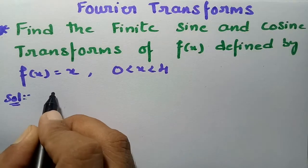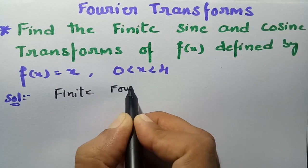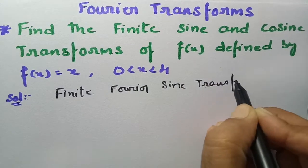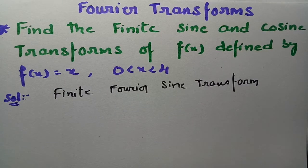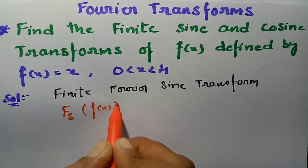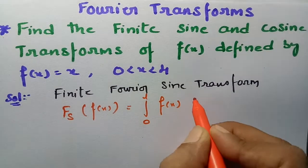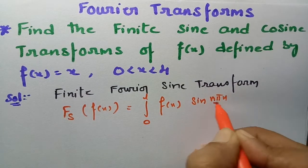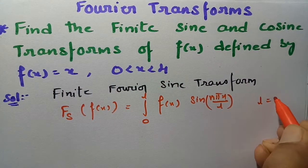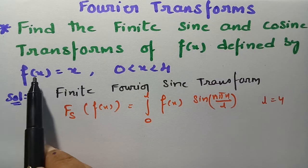First of all I am going to calculate the finite Fourier sine transform. The formula is: the finite sine transform of f(x) is equal to the integral from 0 to l of f(x) times sin(nπx/l) dx. Here our l is 4, so wherever we find l I will substitute 4. And f(x) here is nothing but x.